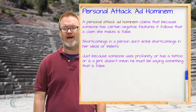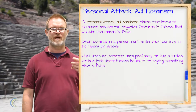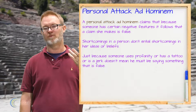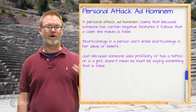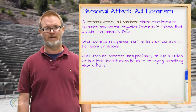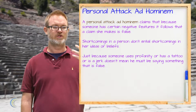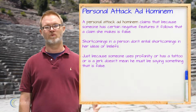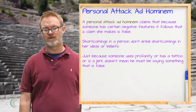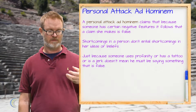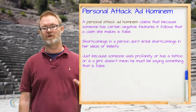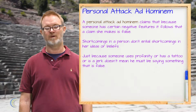A personal attack ad hominem is like it sounds — it's an ad hominem that goes after some particular thing about the person, like maybe who they are or what they've done. The idea is that just because someone is a jerk, or has a tattoo, or talks a certain way, or is a little different, it doesn't mean that what they say must be false. You have to evaluate and objectively check what a person says not just for who they are, but essentially for how reasonable what they say is.